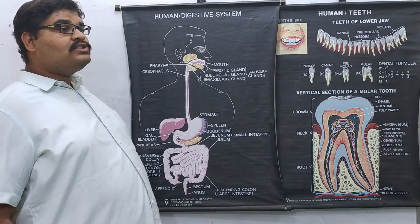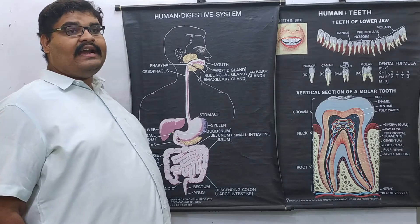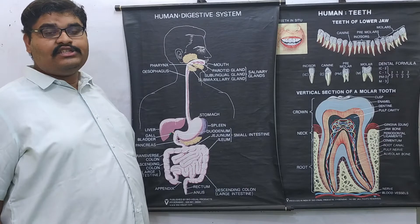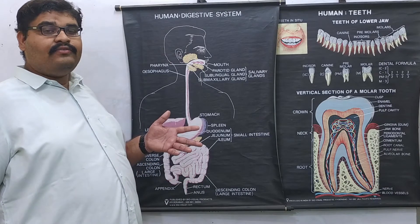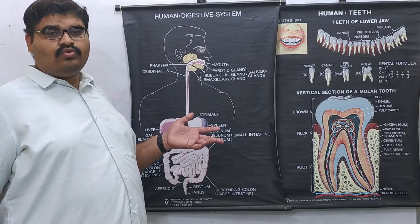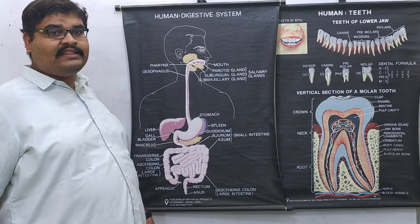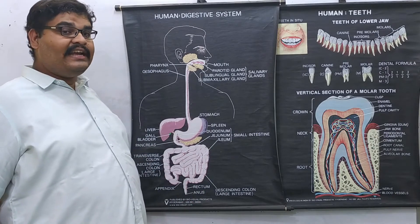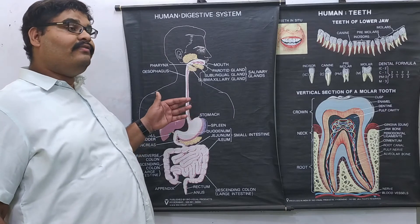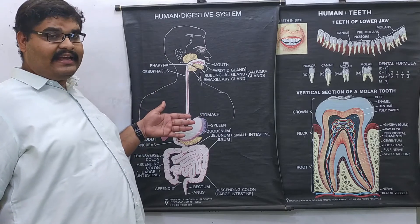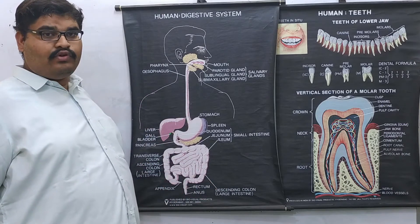The alimentary canal is so long because we are omnivores — we consume food from both plant and animal sources. Plant-based food is very hard to digest, so we need such a complex alimentary canal. Carnivores, which are flesh-eating animals, have a much shorter alimentary canal compared to herbivores and omnivores.